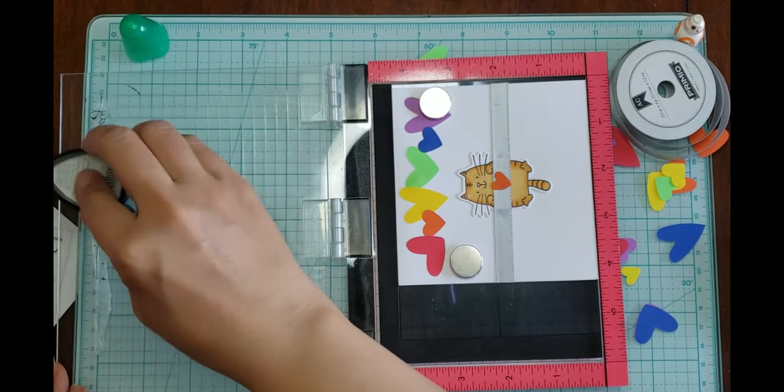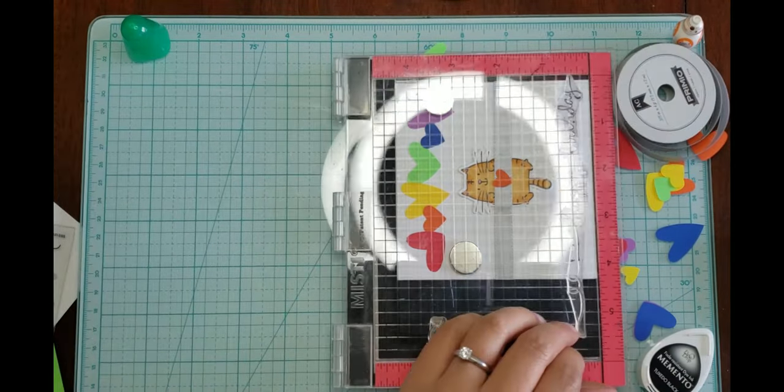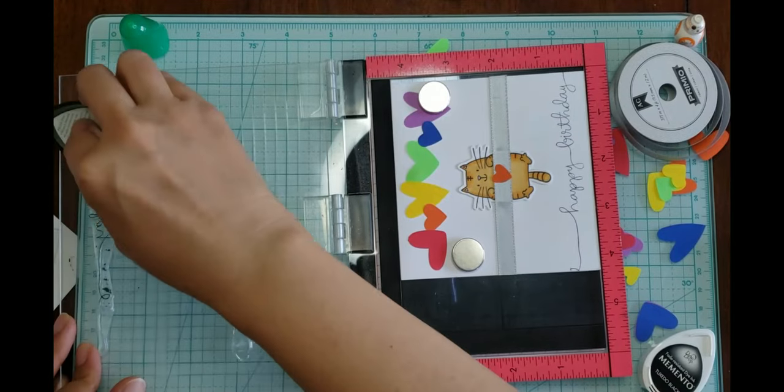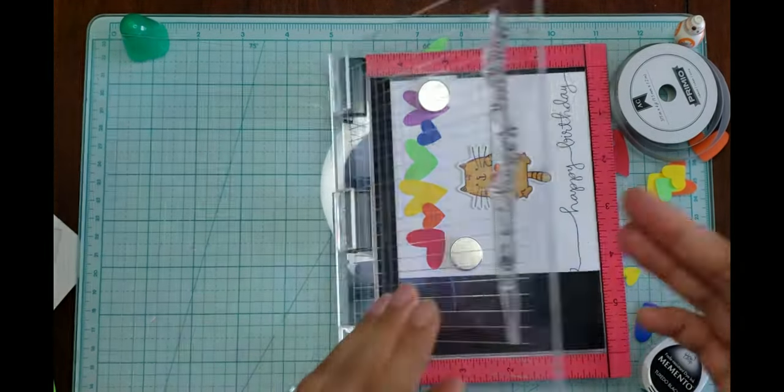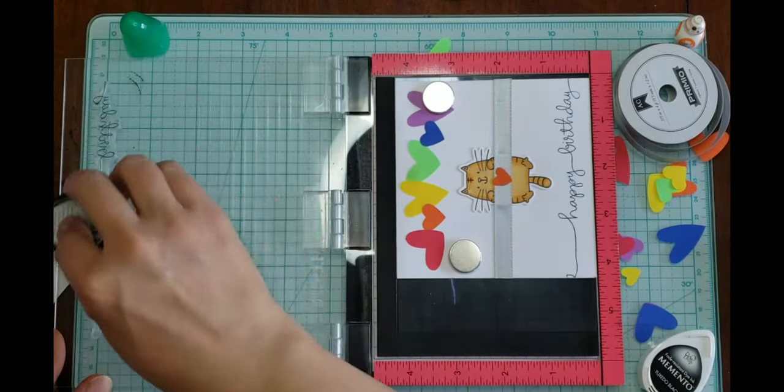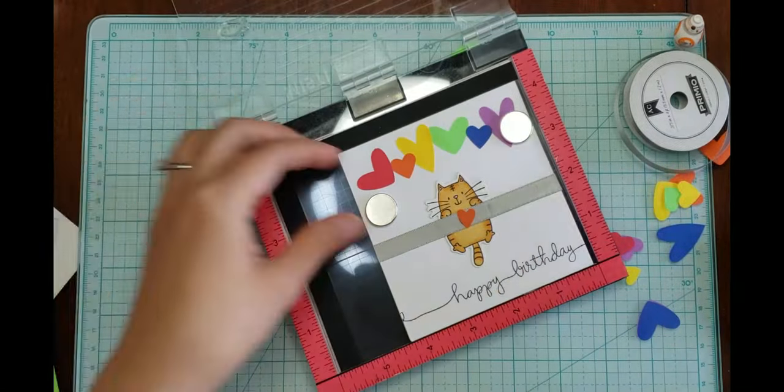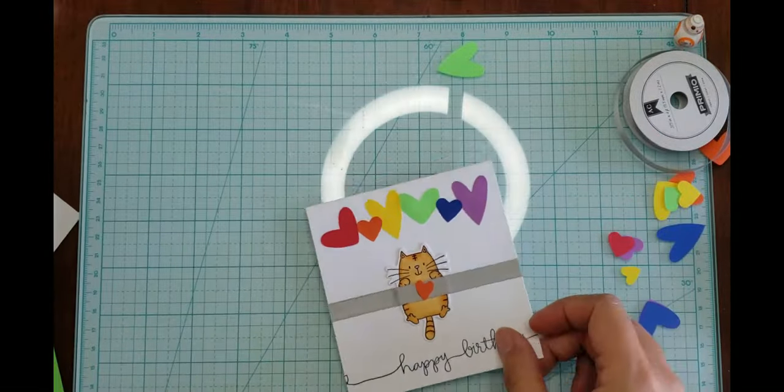So back to the card, I used the Simon Says Stamp handwritten borders. This is a great set. The cursive writing is so cute. They are still available online through the Simon Says Stamp store.